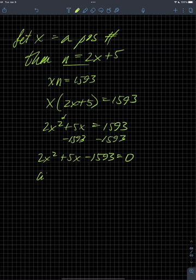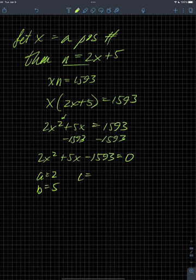So then a is equal to 2, b is equal to 5, c is equal to negative 1593.